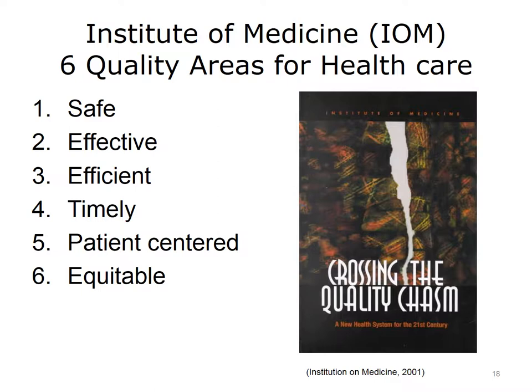Crossing the Quality Chasm provided six aims and simple rules for redesign of healthcare: care should be safe, as safe for patients in their healthcare facilities as in their homes; the science and evidence behind healthcare should be applied as the standard in the delivery of care; care and service should be cost-effective and waste should be removed from the system; patients should experience no waits or delays in receiving service; the system of care should revolve around the patient — respect patient preferences and put the patient in control; and unequal treatment should be a fact of the past, with disparities in care eradicated. Importantly, increasing the quality of care is our goal, and implementing technology is a way to achieve this goal.